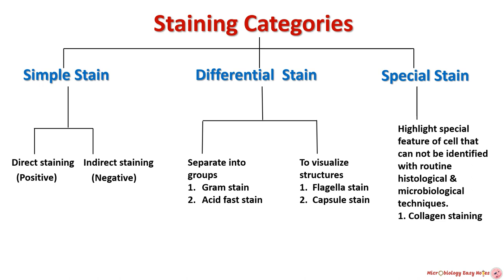There are three types of staining categories. First is simple stain, second is differential stain, and third is special stain. Simple stain is further divided into two groups: direct staining, also known as positive staining, and indirect staining, also known as negative staining. Differential stain is also categorized into two groups. Group 1 separates microorganisms into two different groups — for example, gram staining differentiates between gram-positive and gram-negative bacteria.